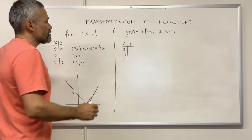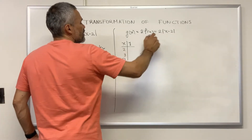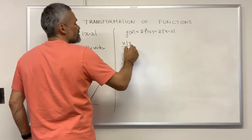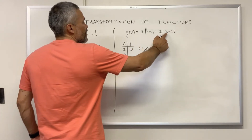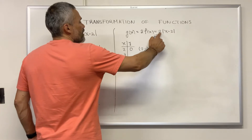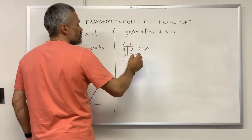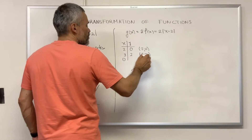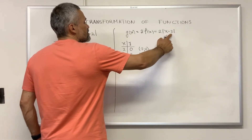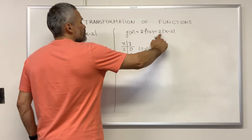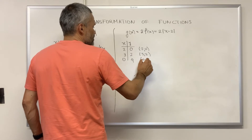The points are: when x equals 2, 2 minus 2 is 0, times 2 is still 0, giving point (2, 0). If x equals 3, then 3 minus 2 is 1, absolute value is 1 times 2 gives us 2, so the point is (3, 2). And if x equals 0, then 0 minus 2 is negative 2, absolute value is 2 times 2 is 4, giving point (0, 4).